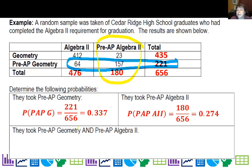Now what's the probability they took pre-AP geometry and pre-AP Algebra 2? Well that 157 is the only number that fits into both, and so I would get 0.239.